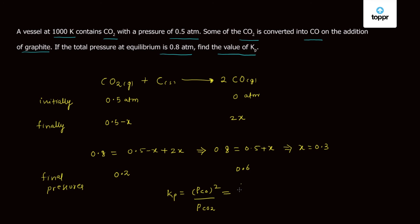Therefore solving, substituting this value, we get 0.6 whole square divided by 0.2 which is 0.36 divided by 0.2 which is 1.8 atm. So the value of Kp which was asked is 1.8 atm.